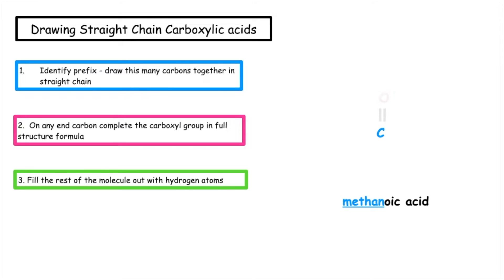On any end carbon we want to complete the carboxyl group in the full structural formula, so we want a double bond O at the top of the carbon and an OH on the left or right hand side of the carbon, and then we want to fill the rest of the molecule out with hydrogen atoms. Remember the valence of carbon is four, so you should only have four lines coming out of each carbon atom in your molecule. This is us drawing methanoic acid.